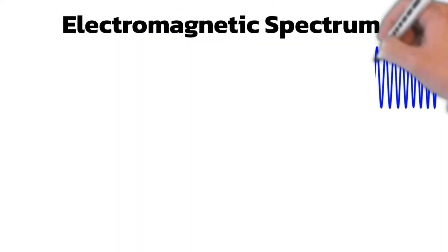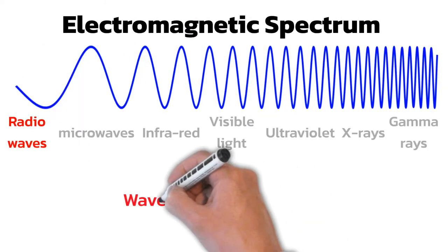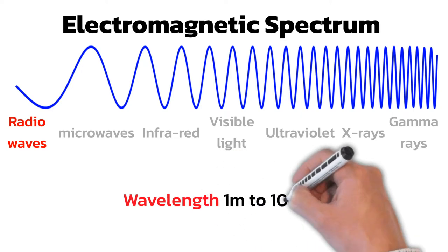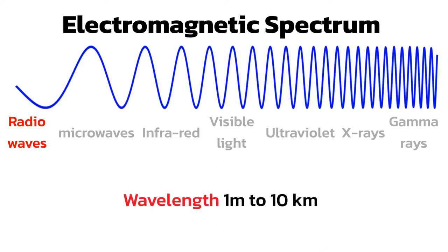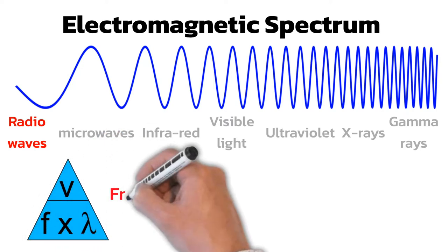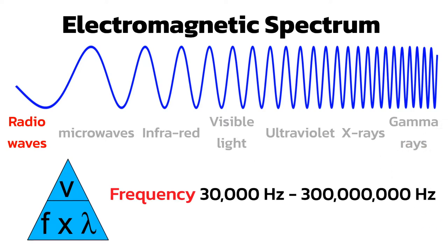Radio waves have the longest wavelength in the electromagnetic spectrum, with wavelengths ranging from about 1 meter to tens of thousands of meters. Using the wave equation, make sure that you can calculate the frequency to show that radio waves have a range of 30,000 Hz to 300 million Hz.